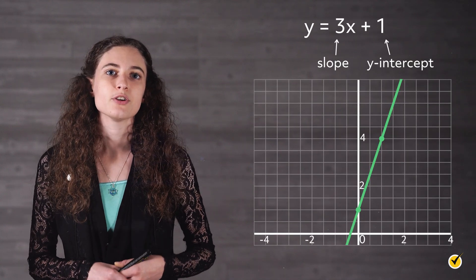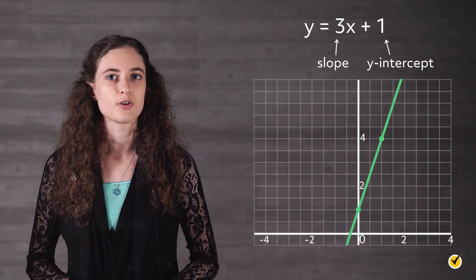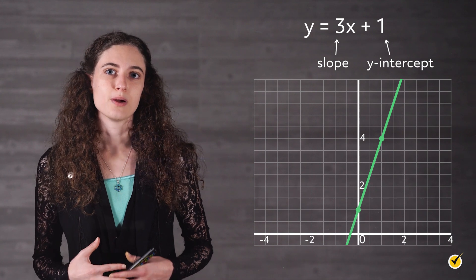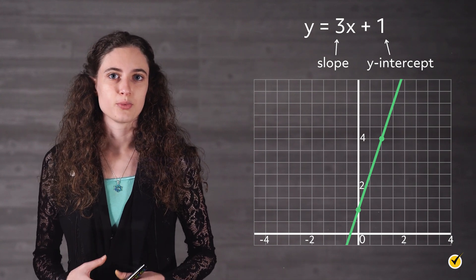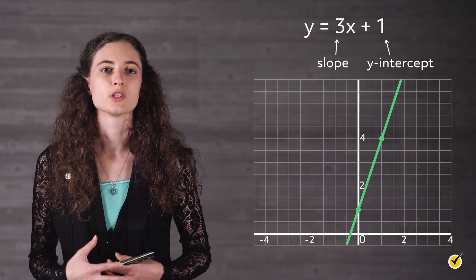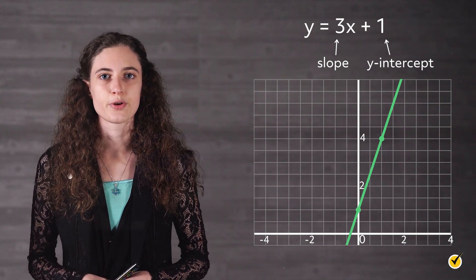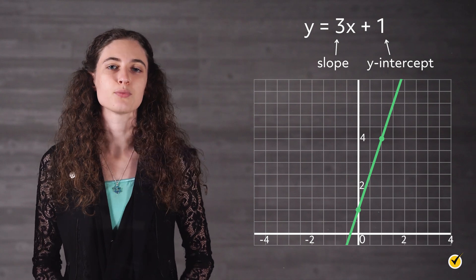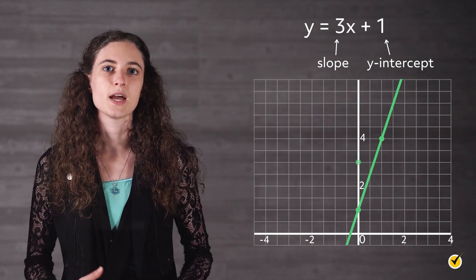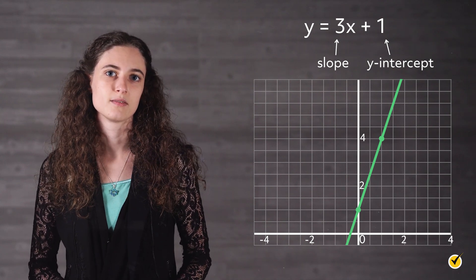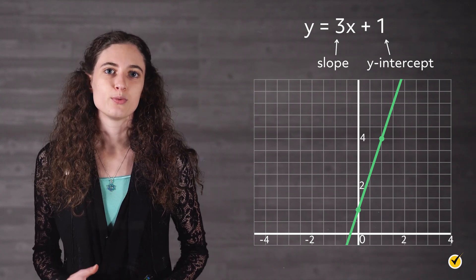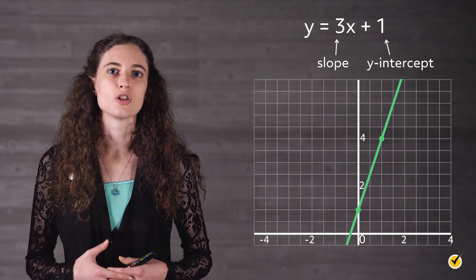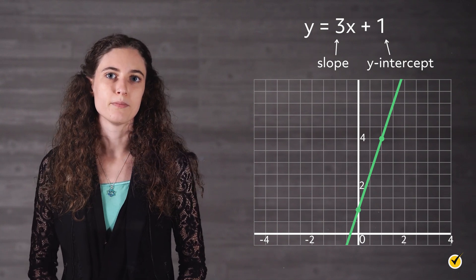Here is an example of a linear equation and the graph to match. Remember that slope represents rise over run. So a slope of positive 3 represents a rise of 3 and a run of 1 — up 3 and over 1. This example was already set up in what is called slope-intercept form.